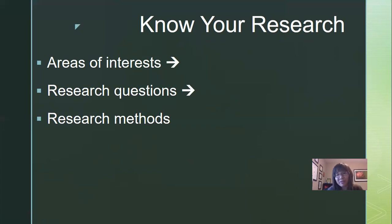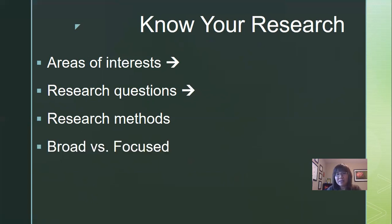For example, I am interested in promoting peer interaction, and I would like to conduct intervention research to establish functional relations between student outcomes — specifically peer interaction — and the intervention. But I'm also interested in other types of work that can promote social interaction as well. People might have a broad approach, doing many different types of research related to one specific population, or they can narrowly focus on one type of method, such as qualitative work focusing on people's perspectives.